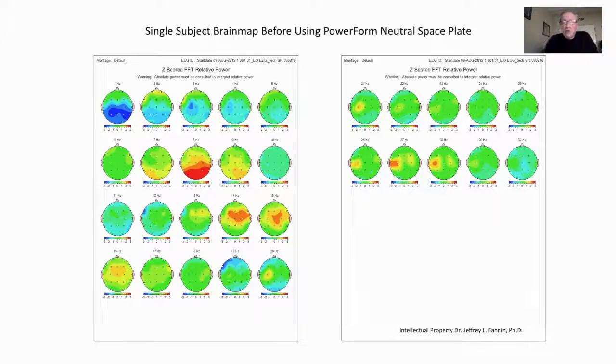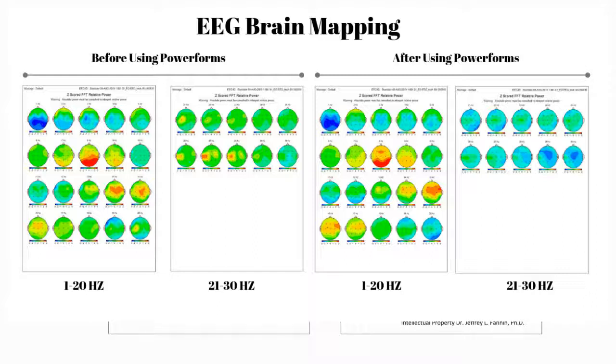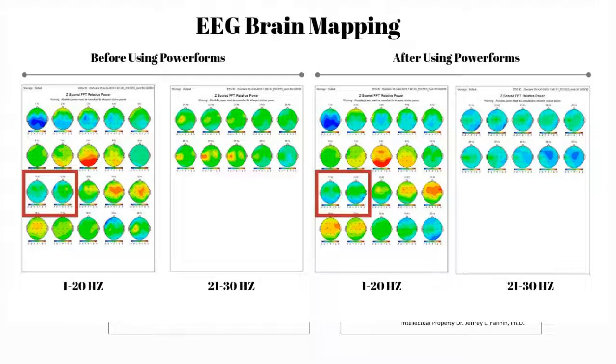So let's take a look at what happens after using the space plate. Now the one thing that you'll notice is there is a lot more blue in here, and both on the top row in 11 and 12 Hertz we see that being present in the moment.